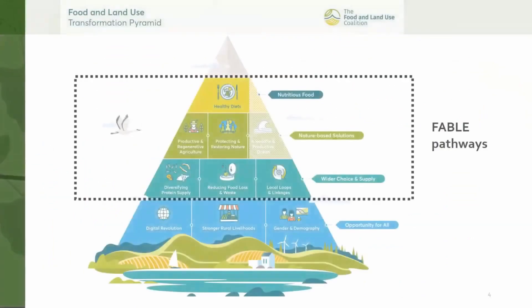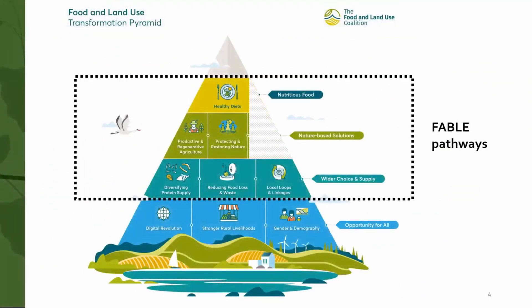The Fable Calculator has been developed for the Fable Initiative under the Food and Land Use Coalition to better understand how countries could transition towards more sustainable systems, how countries can meet the Sustainable Development Goals, the Paris Agreement, and other national objectives.